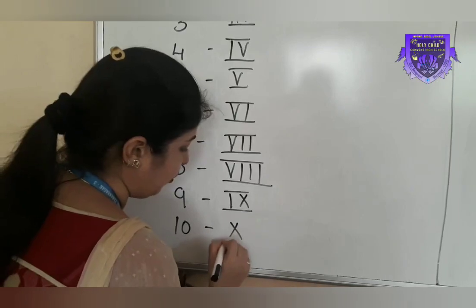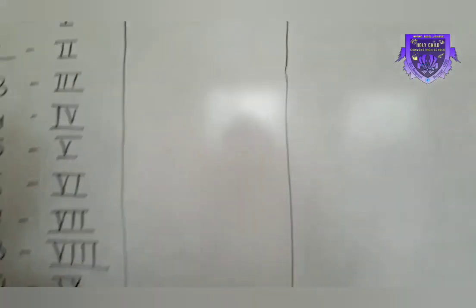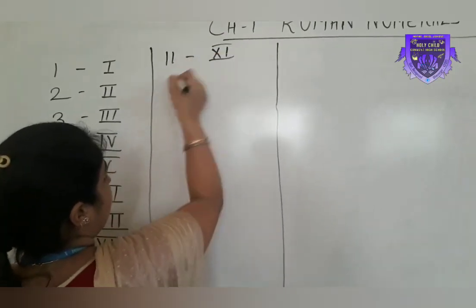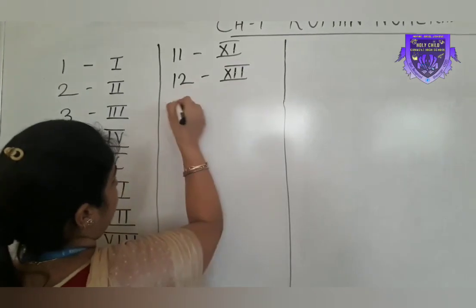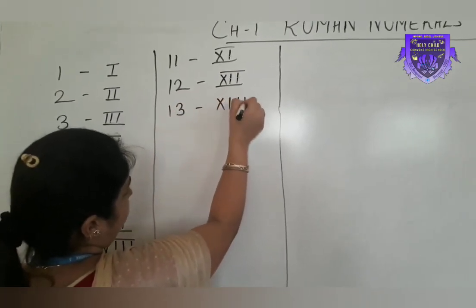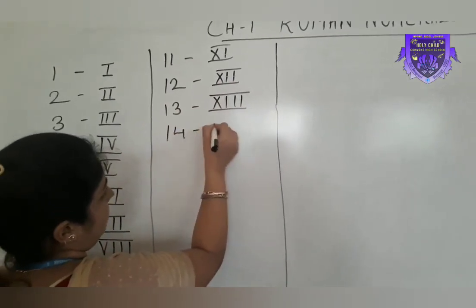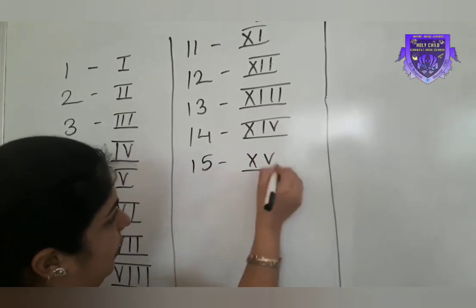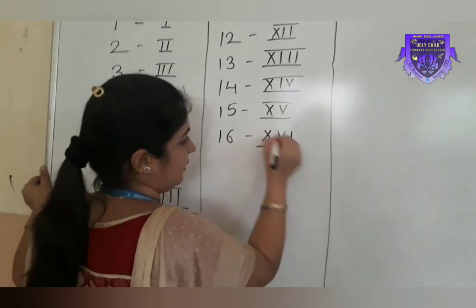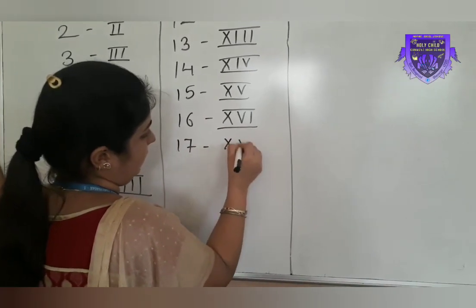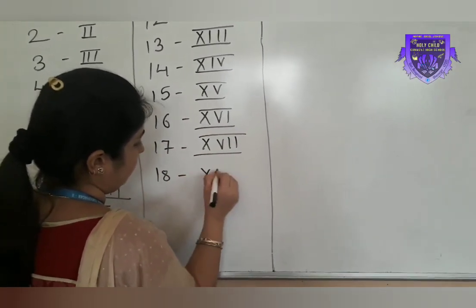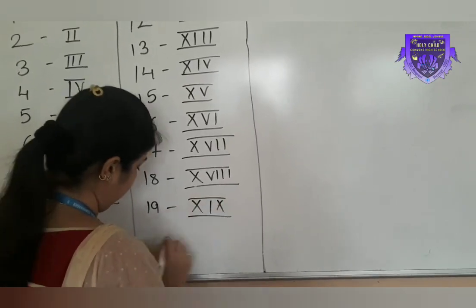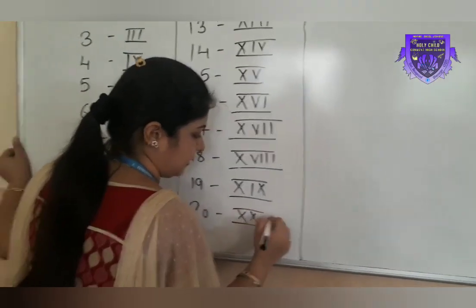Now for 11: 11 means 10 plus 1, so X and I. 12 is 10 plus 2. 13 is 10 and 3. 14 is 10 and as we have written 4 — so XIV. 15 is 10 and 5. 16 is 10 and 6. 17 is 10 and 7. 18 is 10 and 8. 19 is 10 and we write 9. Last, 20 means two times X.